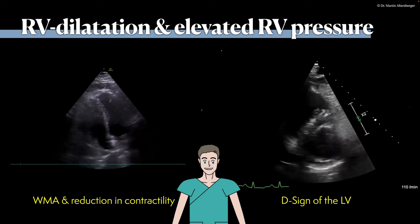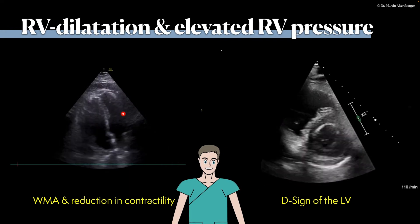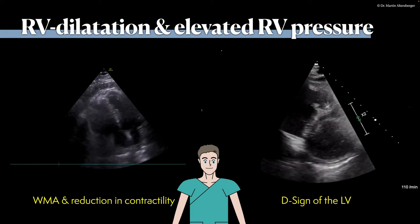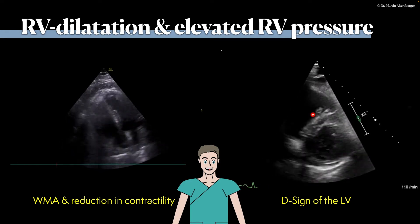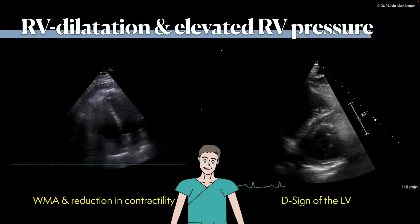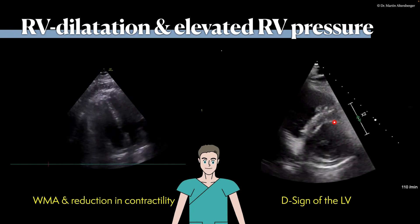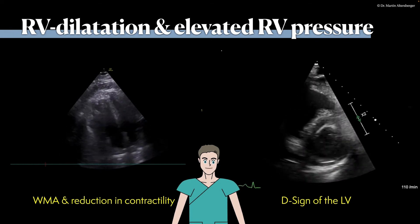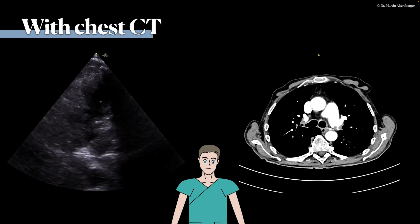We also see a D sign of the left ventricle, which you can appreciate in this view because the septum is pushed from the right side of the heart towards the left side. The pressure flattens the septum in this pressure overload caused by a central hemodynamically relevant pulmonary embolism, and the heart takes on a so-called D-shaped form — the left ventricle looks like the letter D.